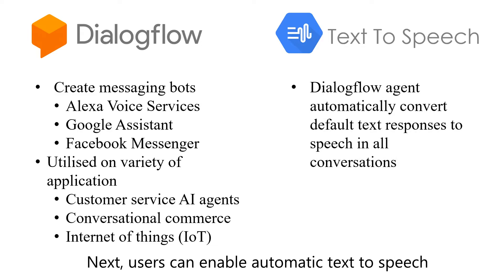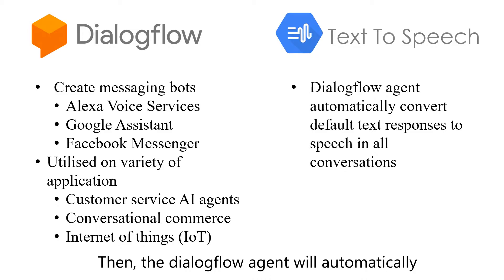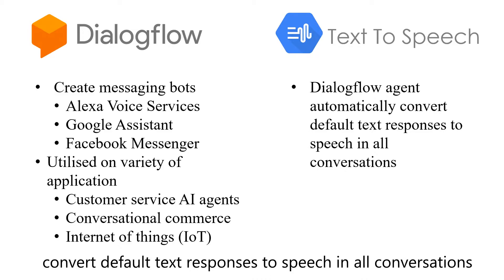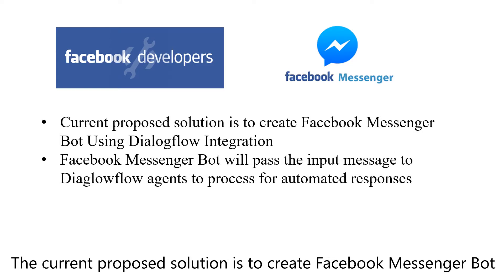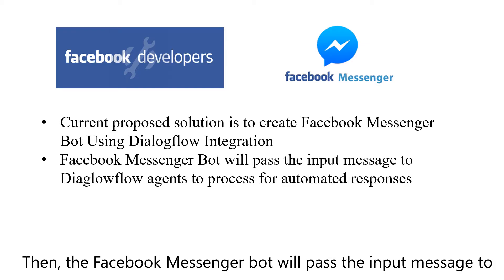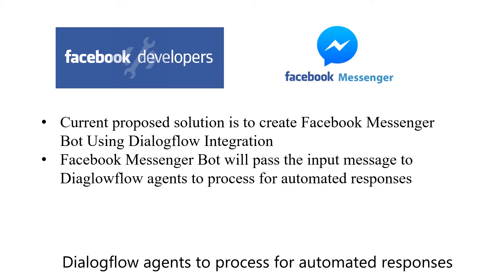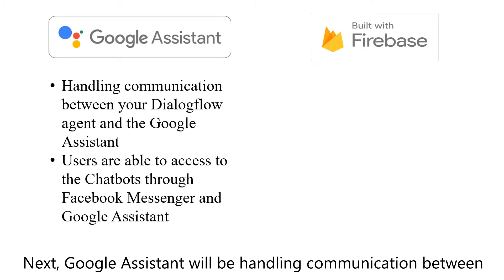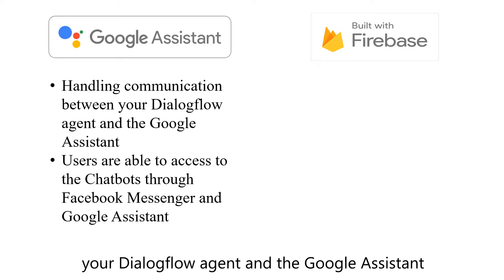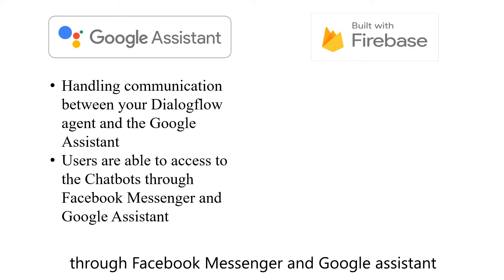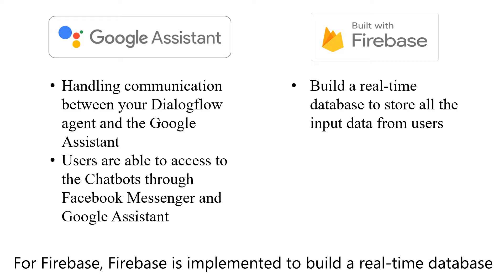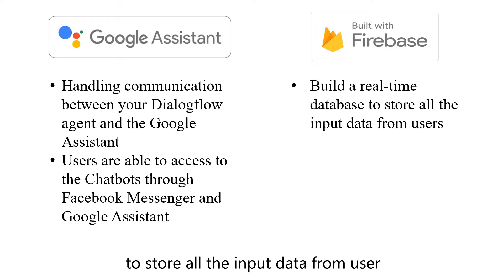Users can enable automatic Text-to-Speech, and the Dialogflow agent will automatically convert default text responses to speech in all conversations. For Facebook Messenger, the proposed solution is to create a Facebook Messenger bot using Dialogflow integration. The bot will pass the input message to Dialogflow agents to process for automated responses. Google Assistant will handle communication between your Dialogflow agent and the Google Assistant using the conversation protocol, so users can access the chatbots through both Facebook Messenger and Google Assistant. Firebase is implemented to build a real-time database to store all input data from users.